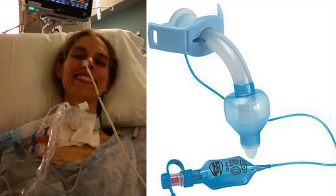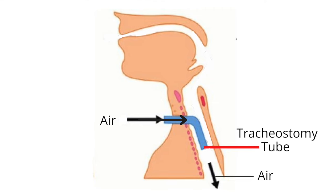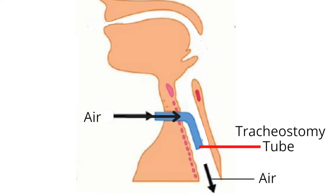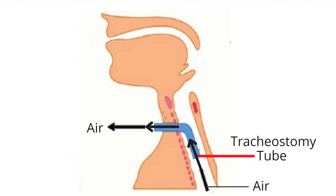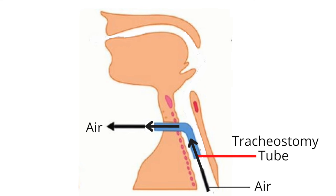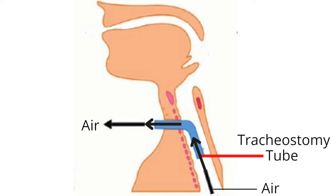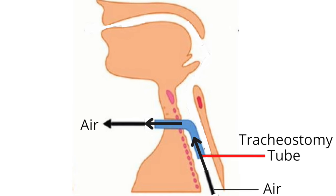The tracheostomy tube used when a person first receives a tracheostomy is a non-fenestrated tracheostomy tube. The tracheostomy tube has a solid shaft — there are no holes in the shaft. When air is breathed in through the tracheostomy tube, it is directed down into the lungs. When a person breathes out, air which passes through the tracheostomy tube is directed out of the tube and into the environment.